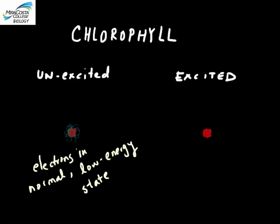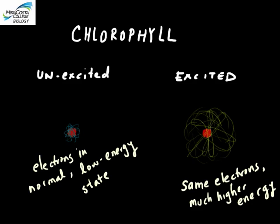After chlorophyll absorbs light energy, it's changed into an excited state, which means that a couple of chlorophyll's electrons have jumped into new, more energetic positions, and this is what allows chlorophyll to rearrange the covalent bonds of CO2 and water.